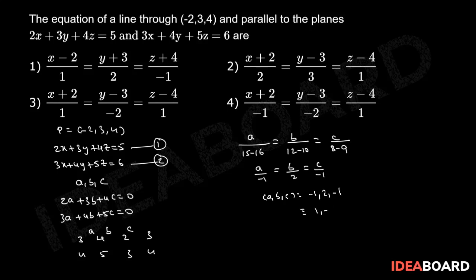Therefore, required equation of the line, that is the equation of the line passing through the point P and having direction ratios (1, -2, 1), is (x + 2)/1 = (y - 3)/(-2) = (z - 4)/1. Therefore, option 3 is correct option.